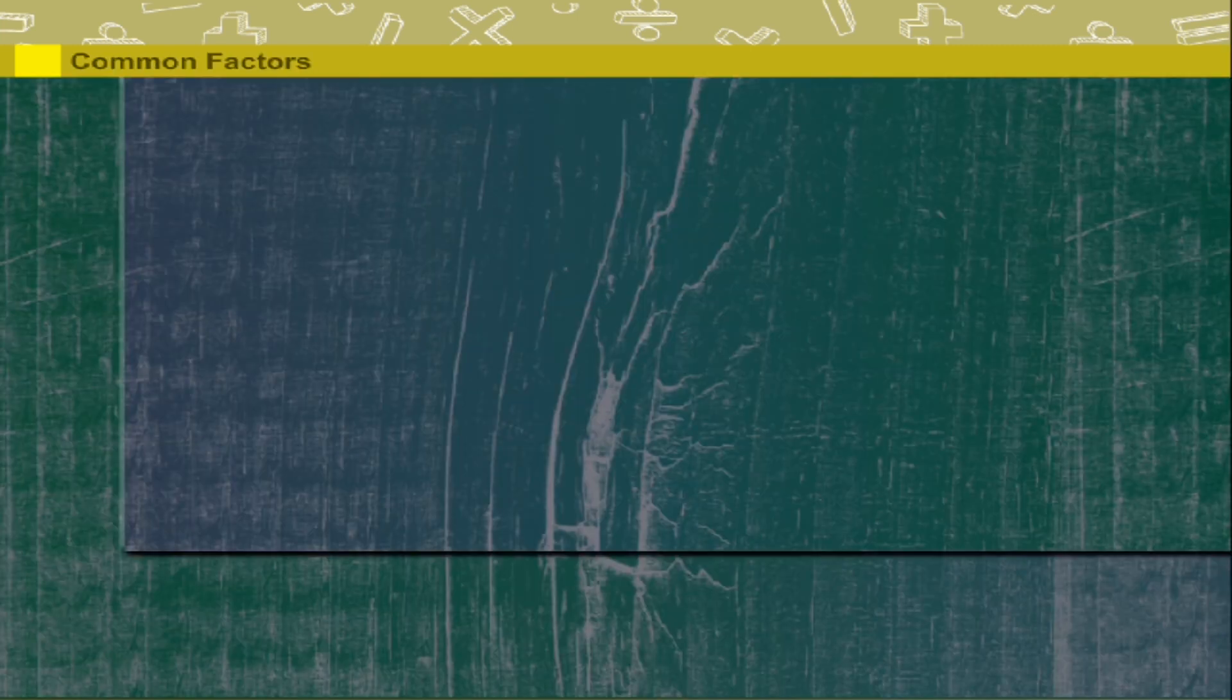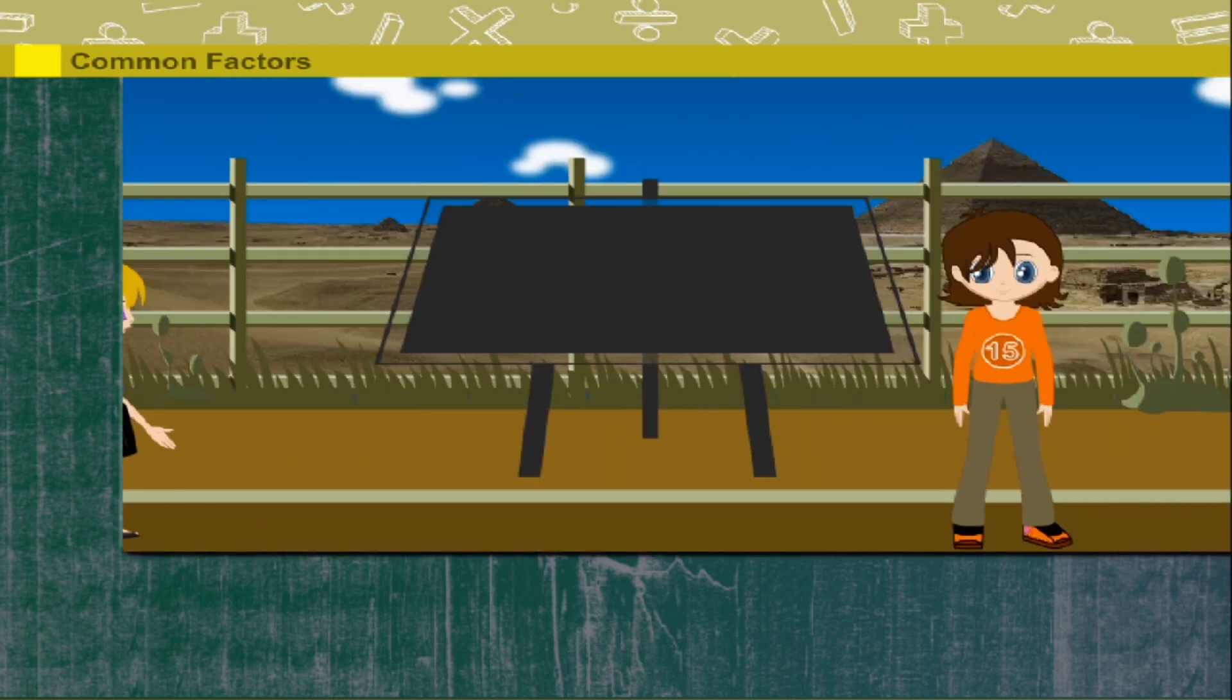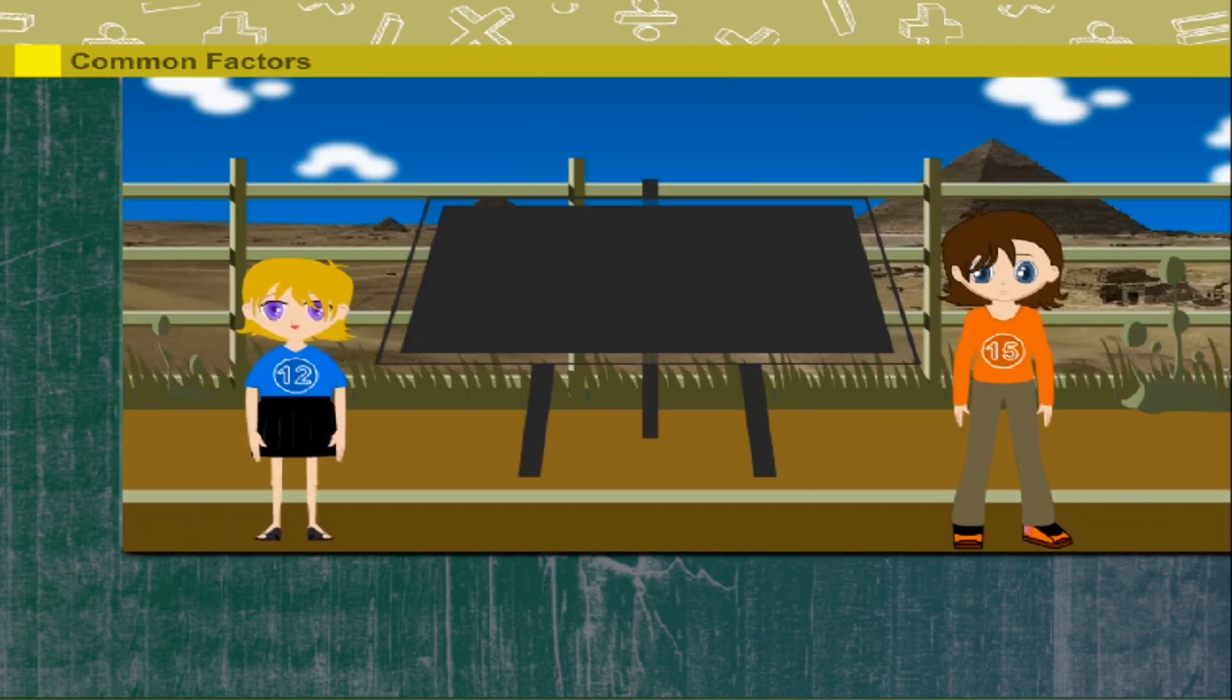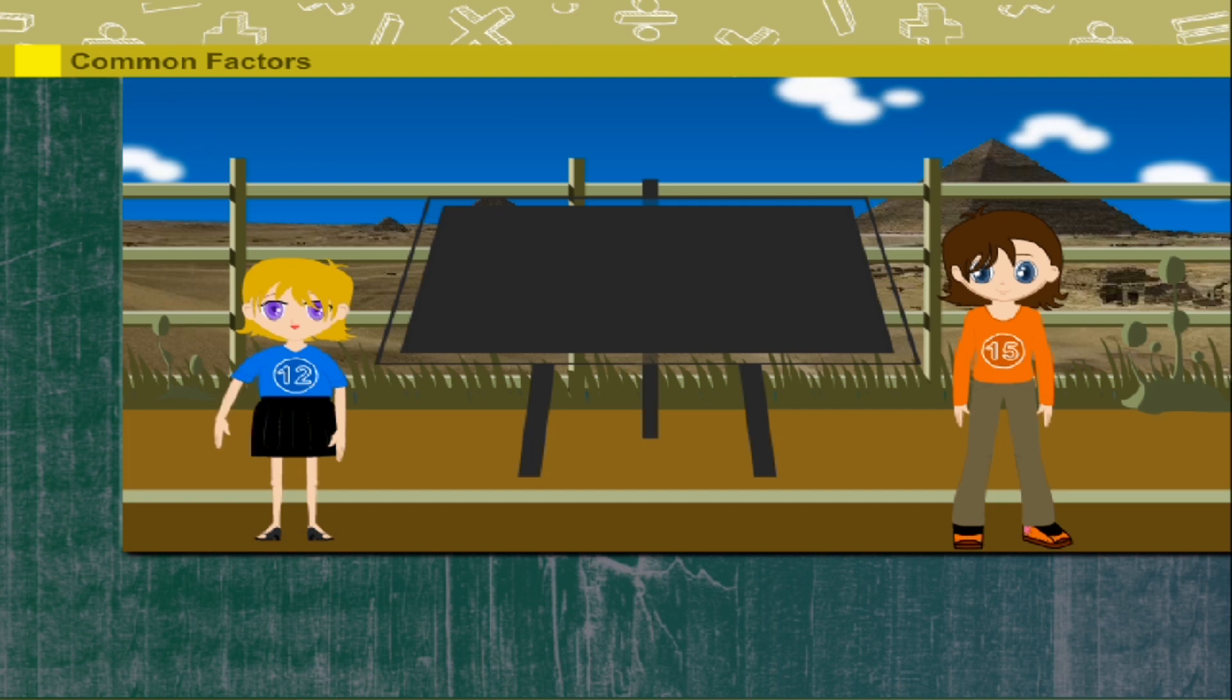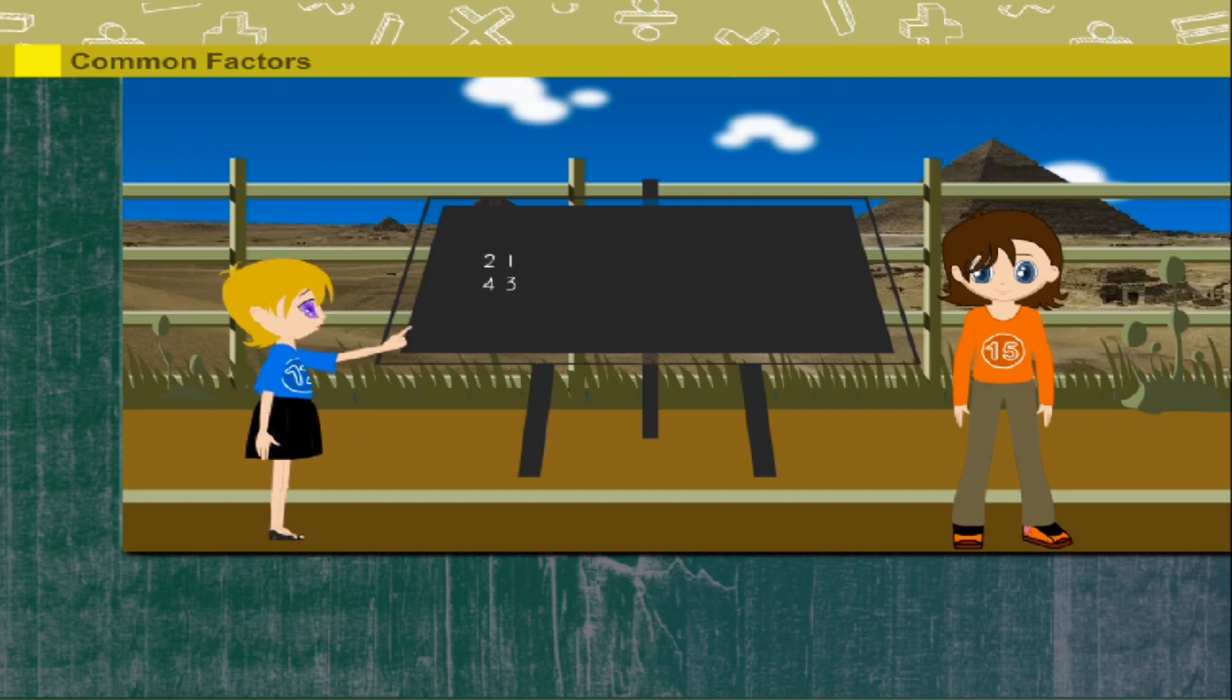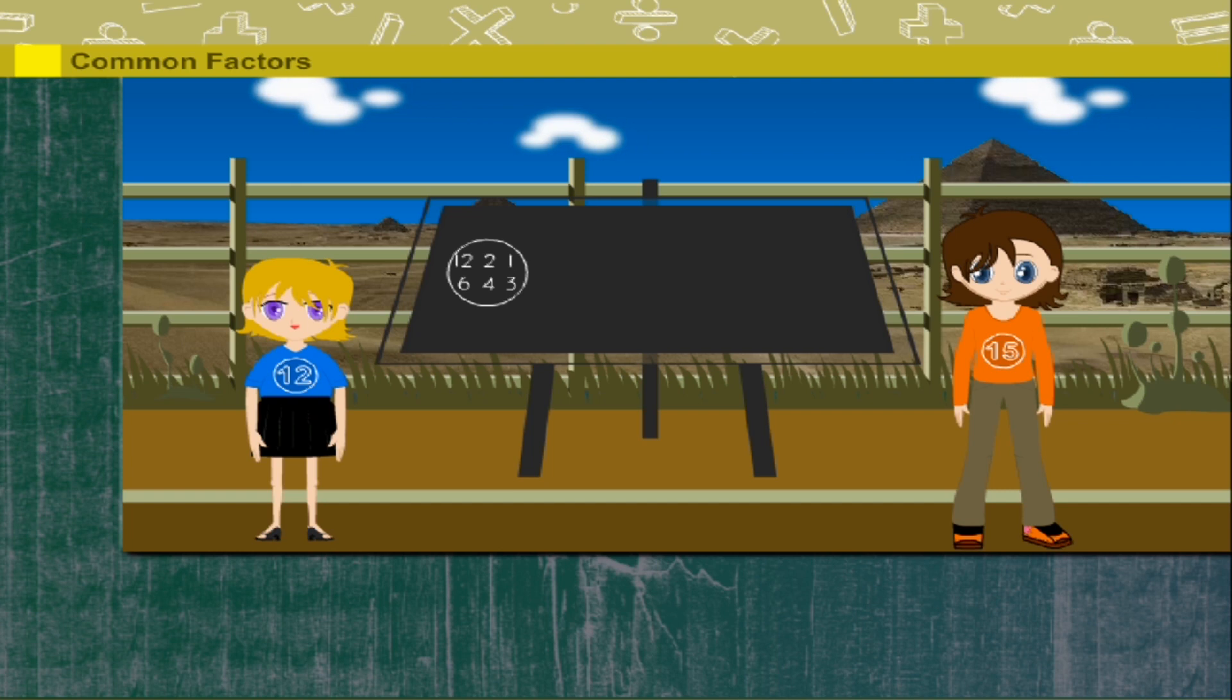Common factors. Mini and Max stand with a blackboard to show common factors. Mini represents number twelve. The factors of twelve are one, two, three, four, and twelve.